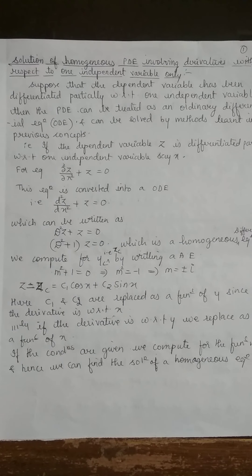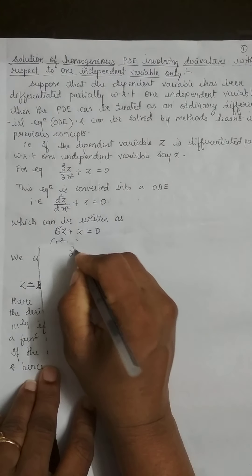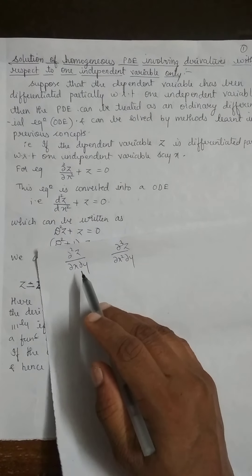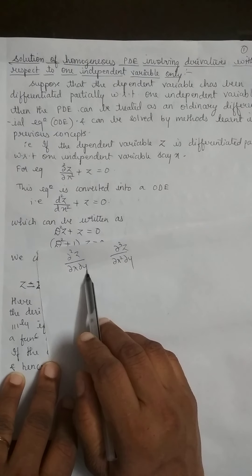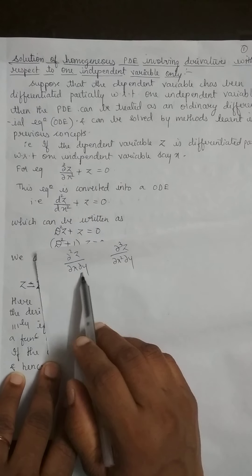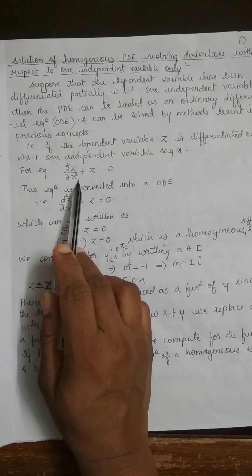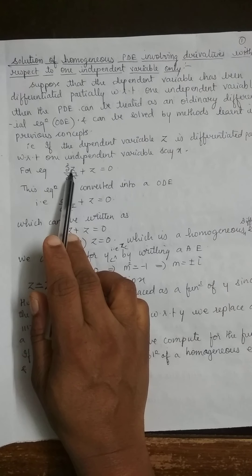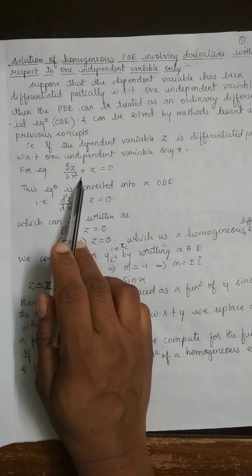In the last videos we had seen equations of the type ∂²z/∂x∂y, ∂³z/∂x²∂y, where z was differentiated with respect to both y and x. But here the difference is that z is differentiated with respect to only one independent variable, x. Here x is treated as the independent variable and z is the dependent variable.